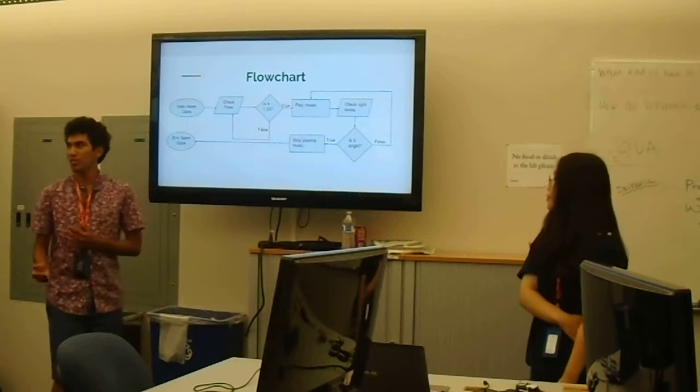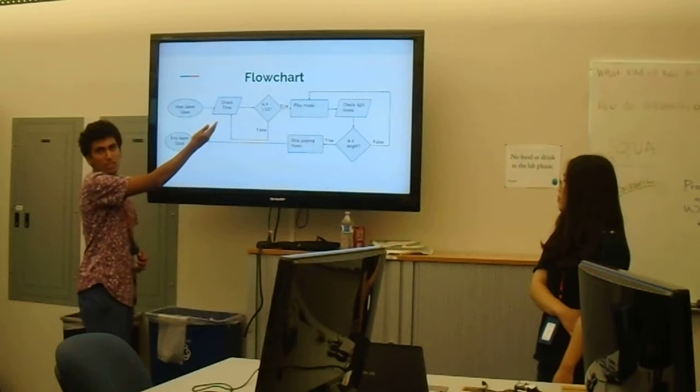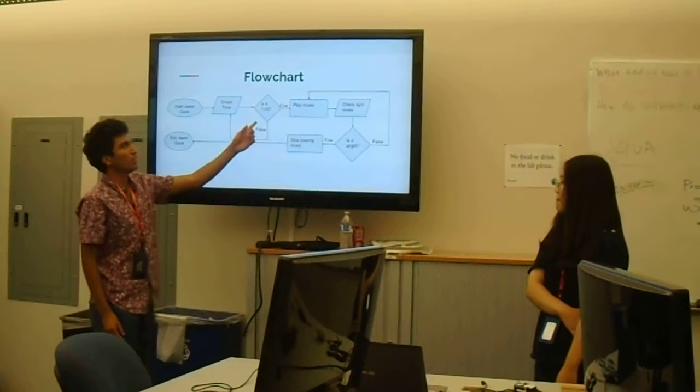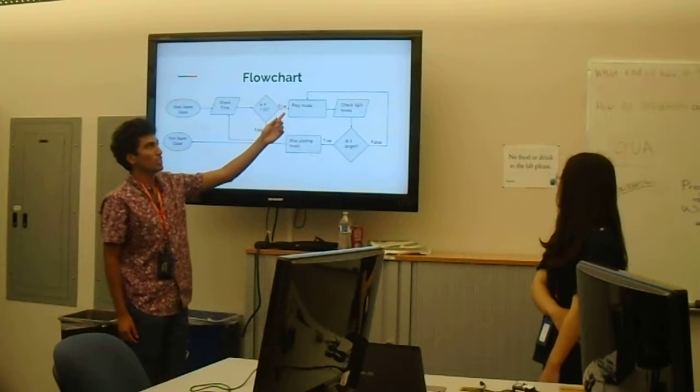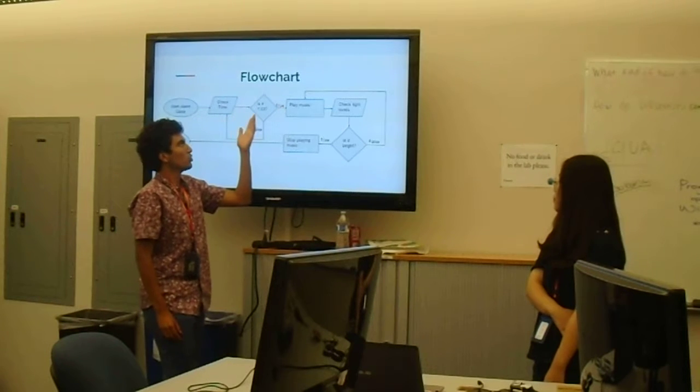Okay, so we've got our flowchart. So we start the alarm clock. What it does first is it checks the time, and if it's 1:33, then it'll play the music. If not, then it'll just continue checking the time until it's 1:33.